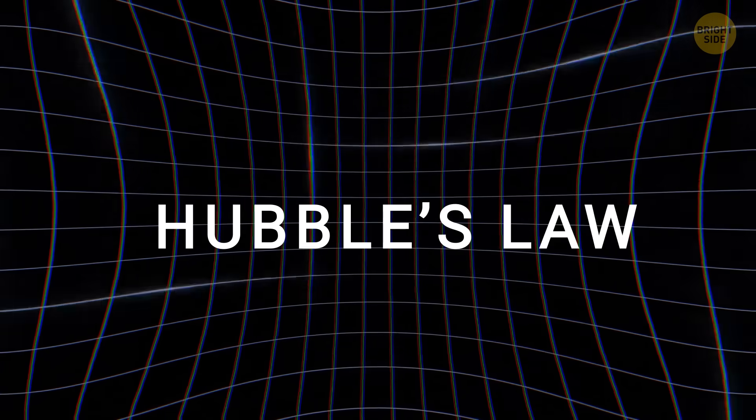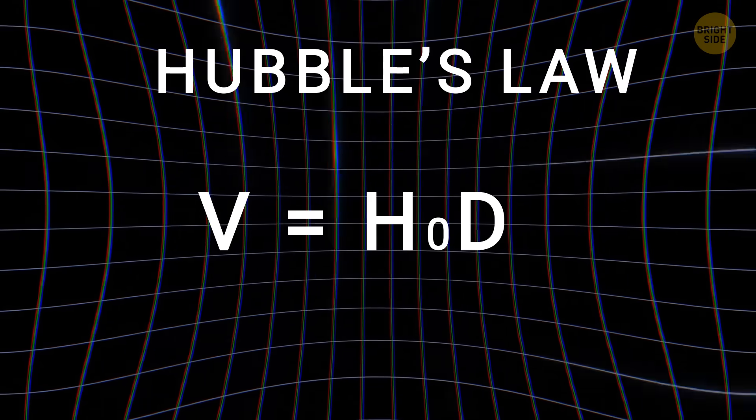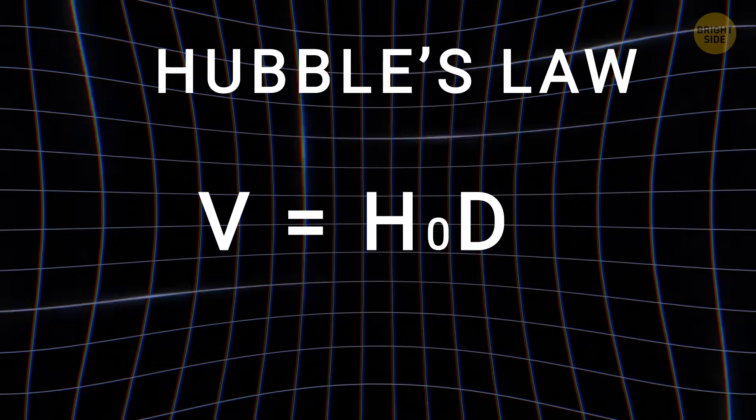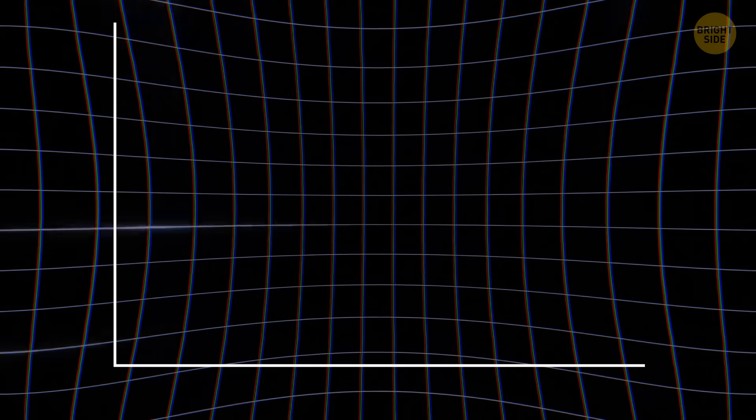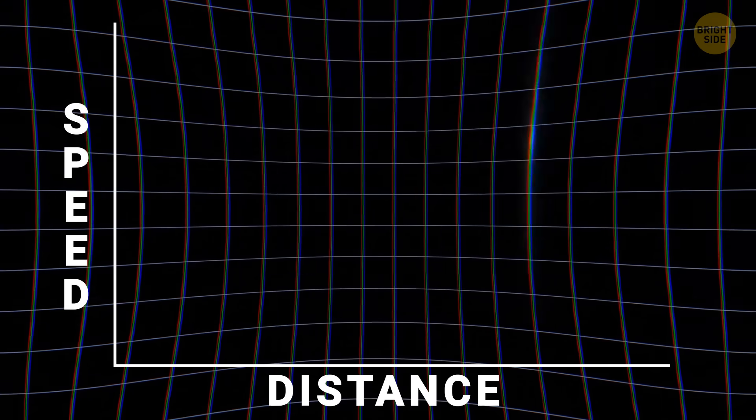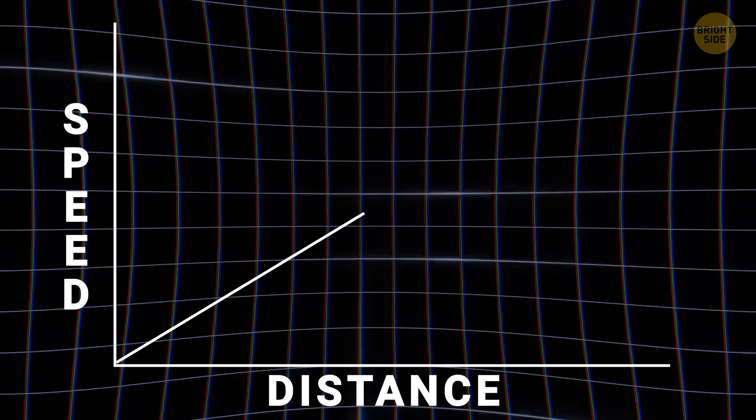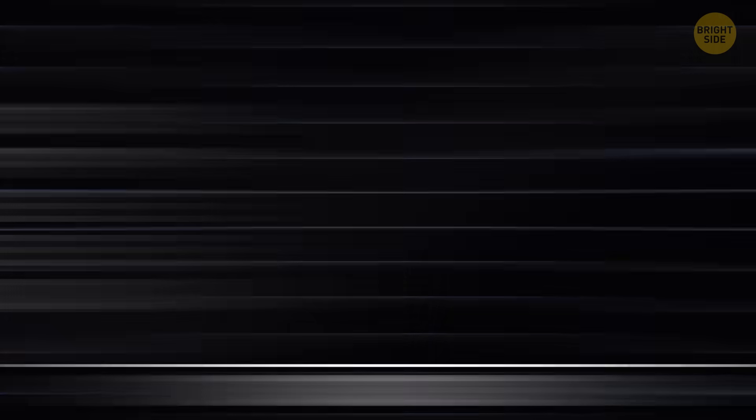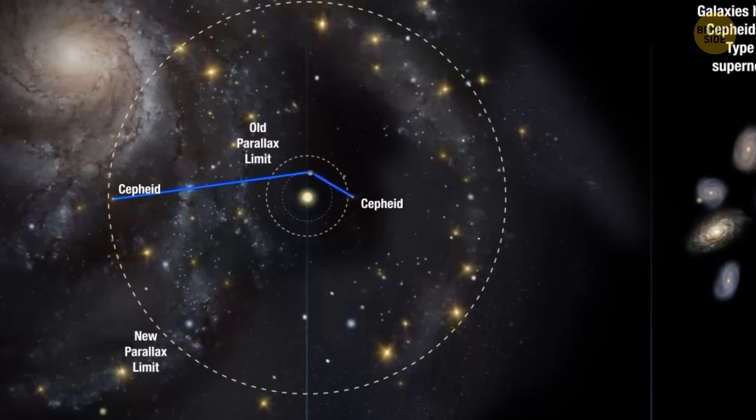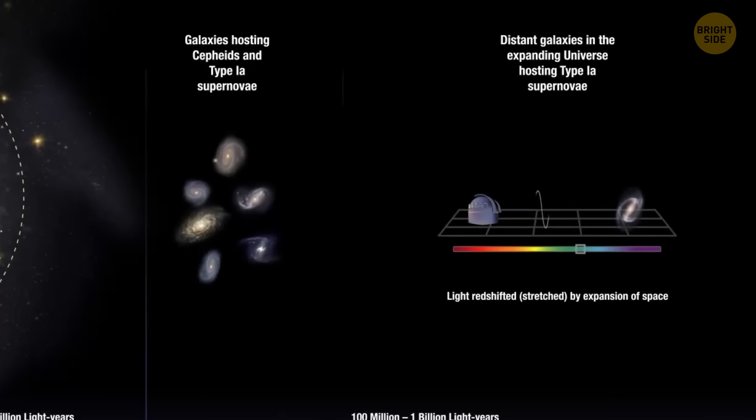Scientists call it Hubble's law. Speed is equal to Hubble constant multiplied by distance. And the Hubble constant is the exact magical speed number that we keep adding up every time we move a million light-years farther. So, the Hubble constant is basically the rate at which expansion happens.